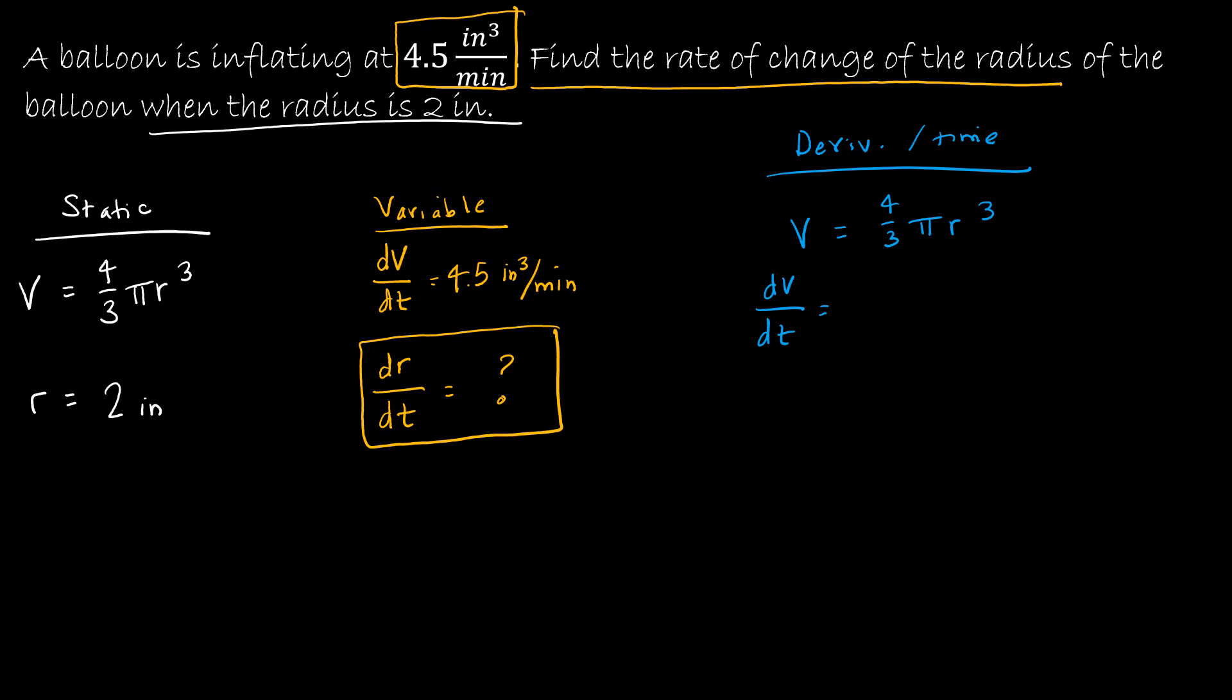So the derivative of volume, because the derivative of V is just 1, and then the derivative of V which we don't know, so it's dV over dt. 4 thirds pi r cubed would be 4 thirds, and then 3 pi r squared, and then of course the derivative of r with respect to time.